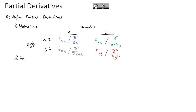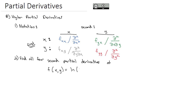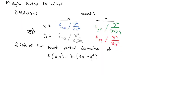Let's find all four second partial derivatives of the function f(x, y) = ln(3x⁴ − y²). First, I'm going to find the partial derivative with respect to x and y, because we need those first derivatives. The first derivative with respect to x: the derivative of natural log is 1 over the argument, so 1 over (3x⁴ − y²), and then we multiply by the derivative of the argument with respect to x, which is 12x³, since we treat y as a constant.